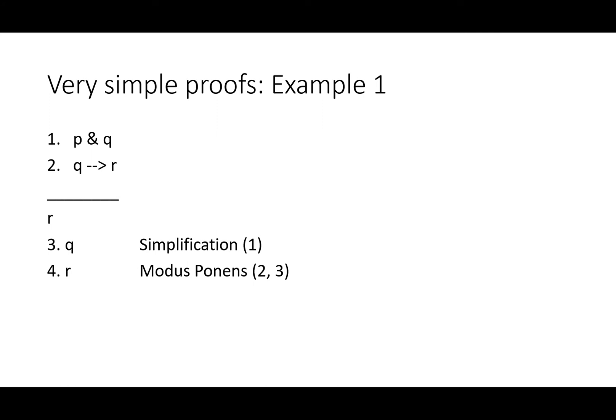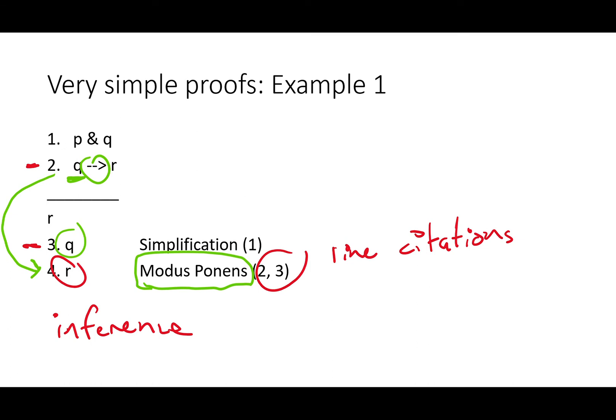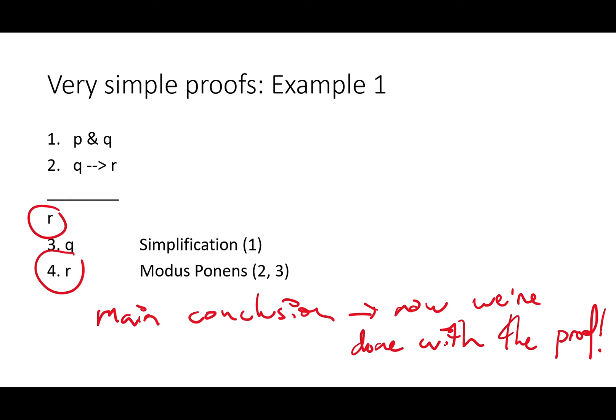Our next line is r, modus ponens two three. You're going to find some rules with some pretty strange names, mostly derived out of Latin or Greek. But we'll come back to it. First of all, the inference, r, and the line citation, lines two and three. In this one, r is the antecedent of a conditional, found in line two. And q, q is the antecedent, r is the consequent. This rule says when we've got the arrow and the antecedent, we can get the consequent. If it's raining, the ground is wet. It's raining, therefore the ground is wet. We'll go more over that rule and why it works in a future week. But for now, we can just accept that we've reached our main conclusion. We've used a rule that everyone agrees upon and cited a premise and a sure intermediate conclusion to come up with a main conclusion. Now we're done with the proof. Line four matches our conclusion, so we don't need to do anything else. We've proved this argument is valid.